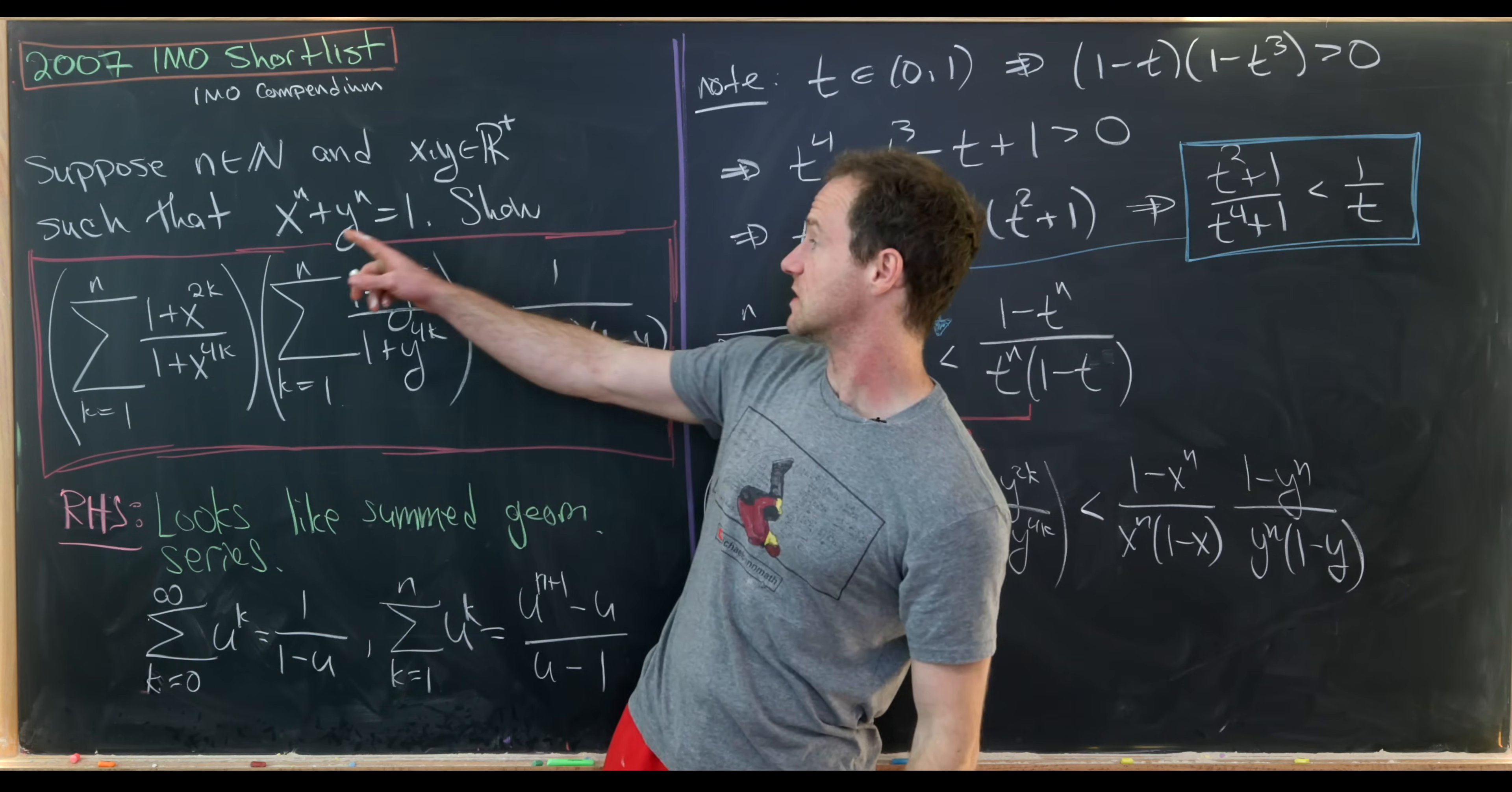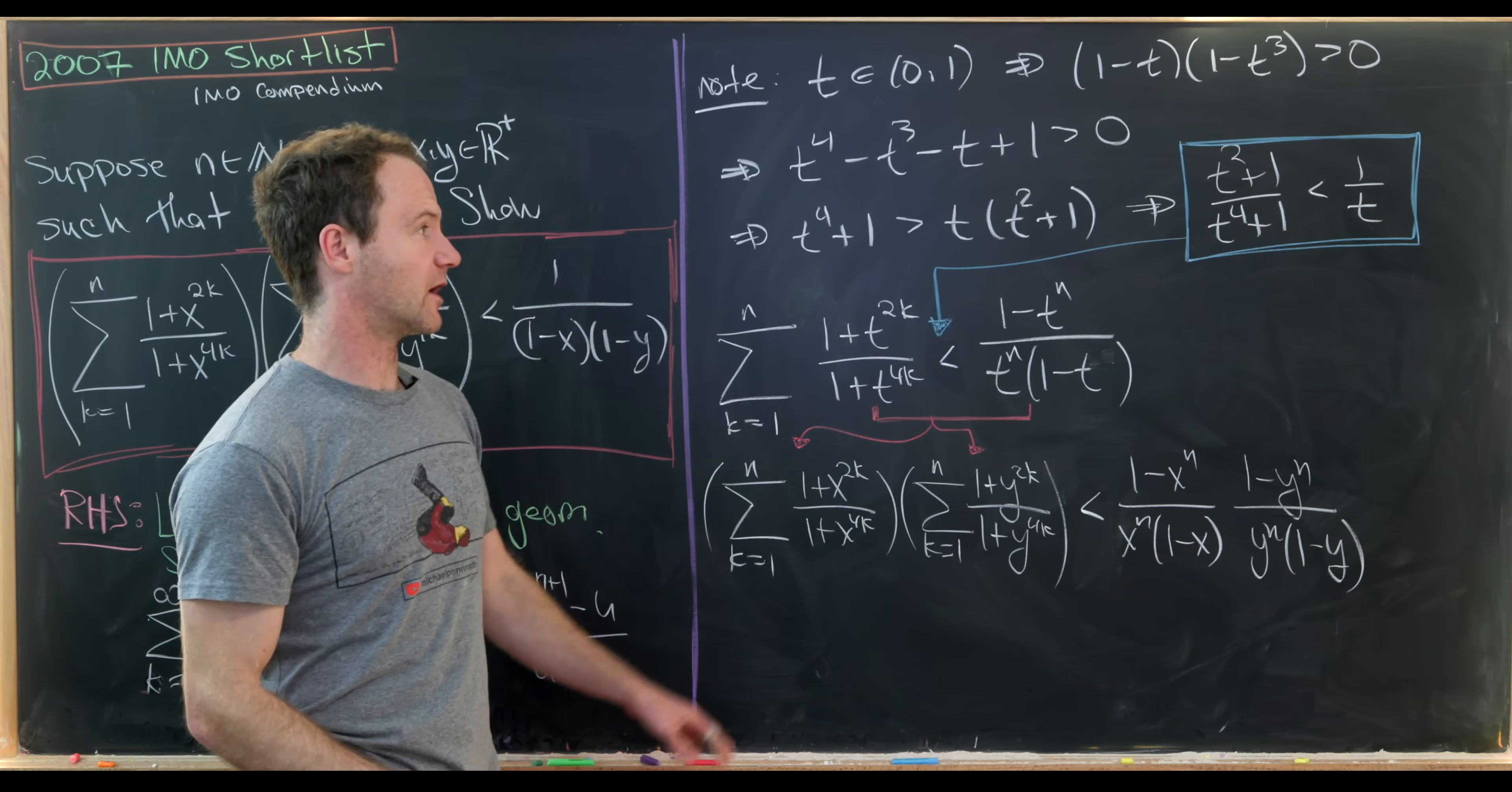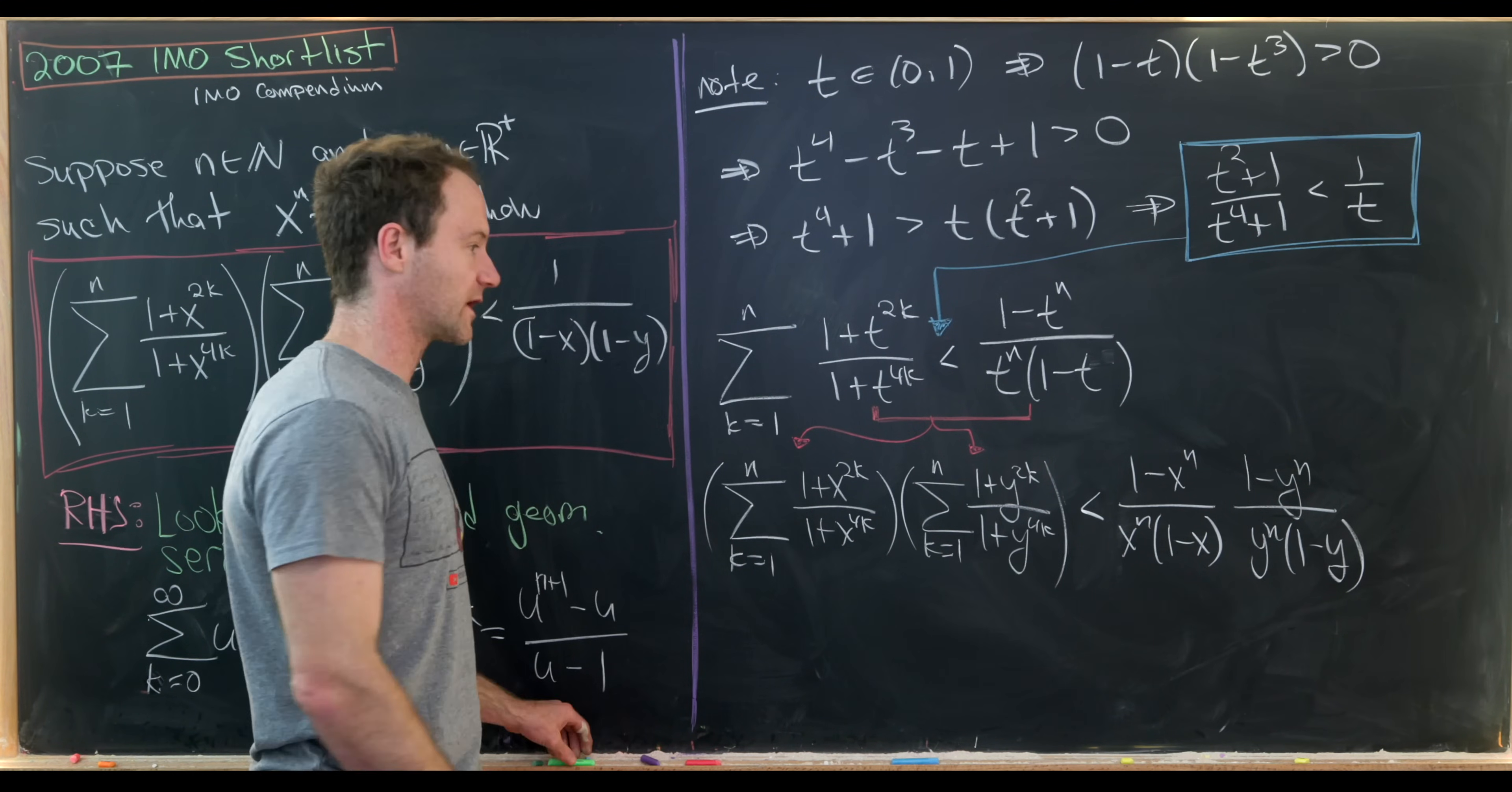We haven't really so much used that x to the n plus y to the n equals 1, except to use the fact that x and y are between 0 and 1, which remember that's kind of built into all of this. But now we can use it more explicitly.